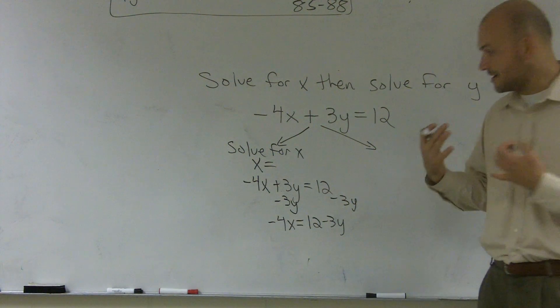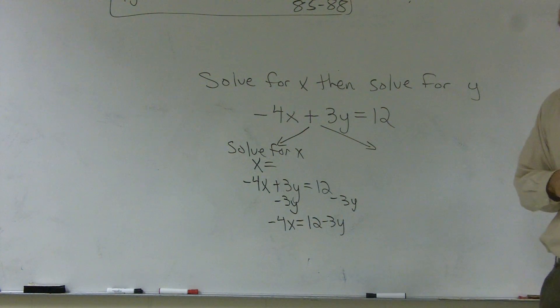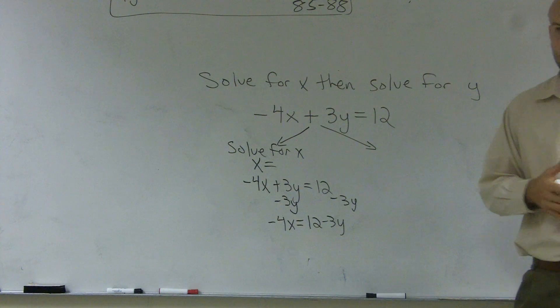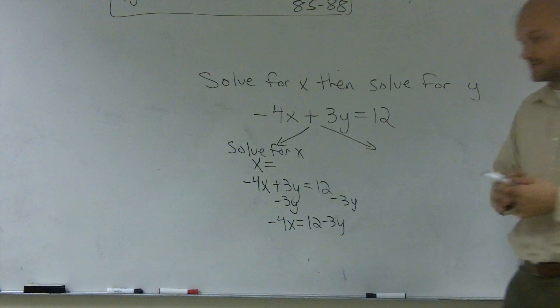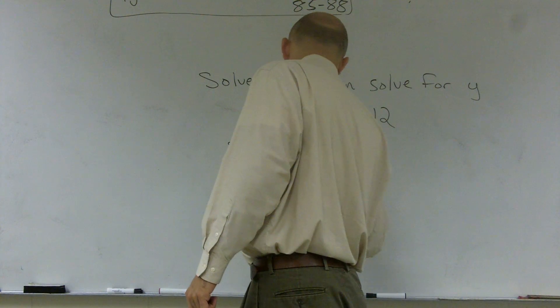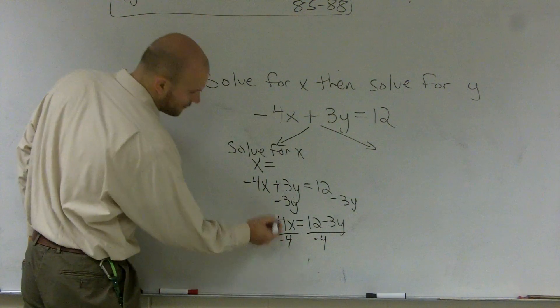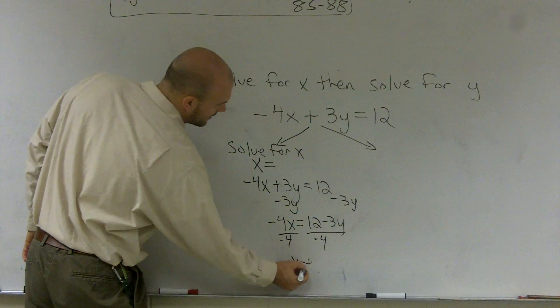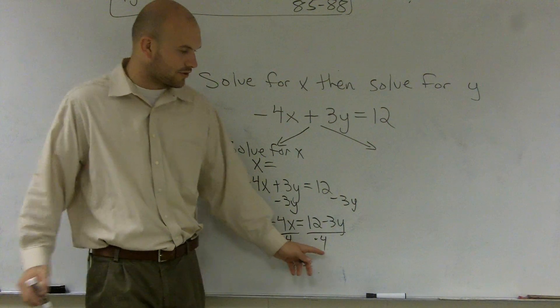Then the last thing we need to do is say, all right, now what is happening to that x? Well, it's being multiplied by negative 4. So to undo multiplication, we divide. So therefore, that cancels off to give me 1. And I'm left with x equals.